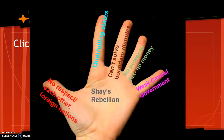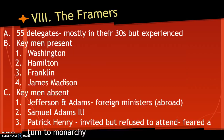Shays' Rebellion was basically the powder keg that exploded and changed the idea that the government needed to change. The framers met in Philadelphia — 55 delegates, mostly men in their thirties, but experienced. The key players were Washington, Hamilton, Franklin, and Madison.